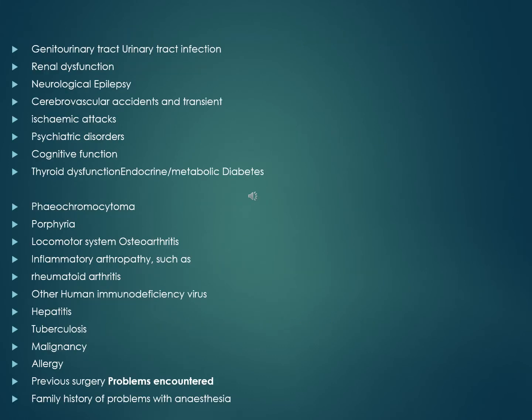Systemic conditions to consider include: genitourinary tract — urinary tract infection and renal dysfunction; neurological — epilepsy, cerebrovascular accidents and transient ischemic attacks, psychiatric disorders, cognitive function, thyroid dysfunction; endocrine/metabolic — diabetes, phaeochromocytoma, porphyria; locomotor system — osteoarthritis, inflammatory arthropathy such as rheumatoid arthritis; other — HIV, hepatitis, tuberculosis, malignancy, allergy, previous surgery problems encountered, and family history of problems with anaesthesia.